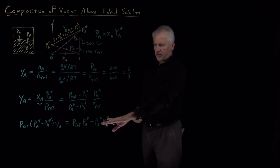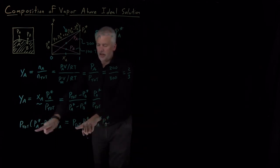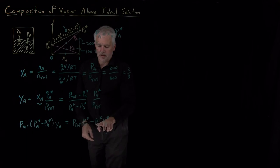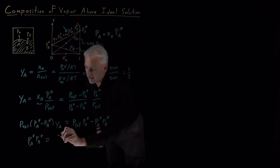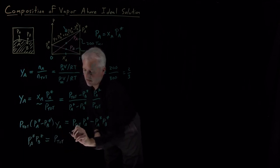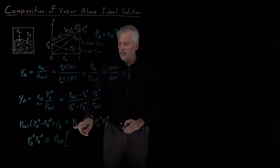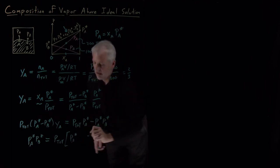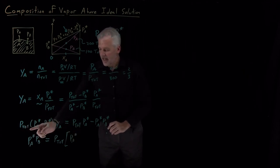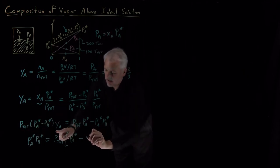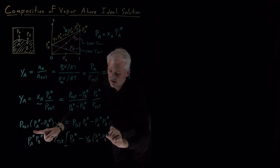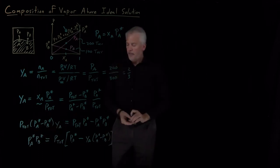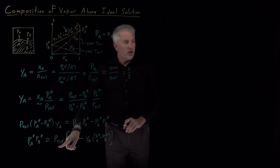That's equally ugly, but it no longer involves fractions. If I want to isolate the two terms involving P total, let's put the PA star PB star over on the left side and bring this term with the P total over to the right side so that everything on the right will involve P total. And I've got P total times PA star and once I bring this over, I've got P total times a negative Y sub A PA star minus PB star.